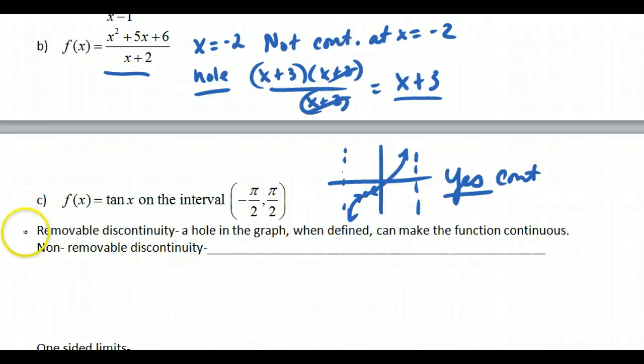Then we have some more specific discontinuities. We have a removable discontinuity, which is a hole in the graph. And then when defined, can make the function continuous. So sometimes we can fill in the hole.